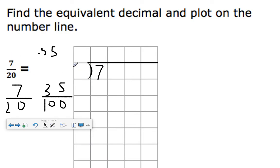So 7 divided into 20 groups. Can 20 go into 7? No. Zero times. If I subtract this, I get 7. How do I write 7 without changing its value? 7.0. I bring it down.